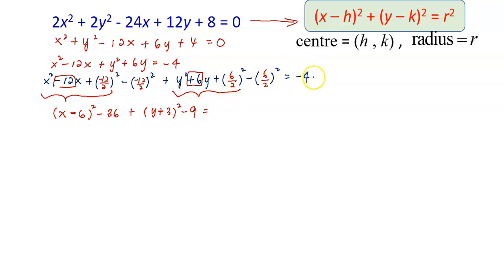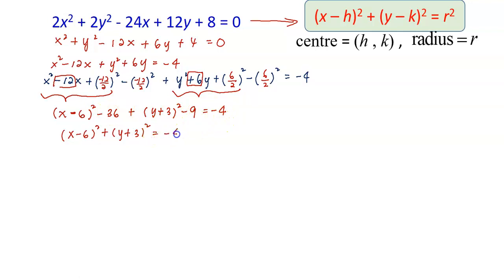We move the constants to the right-hand side and put both squared brackets together in terms of x and y. The right-hand side becomes −4 + 36 + 9. Simplifying: 36 − 4 = 32, and 32 + 9 = 41.